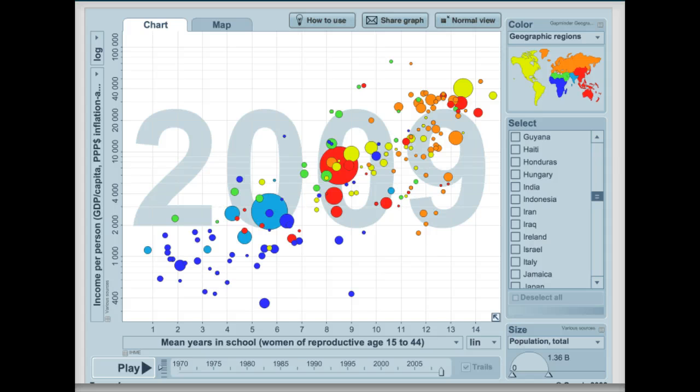We chose to focus on two specific variables, one being the mean years in school for ages 15 to 44 of women, and the other being income per person.